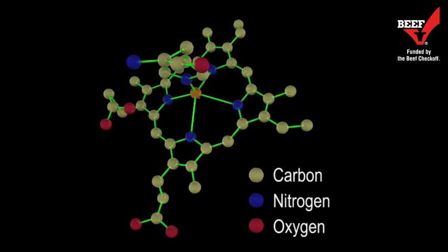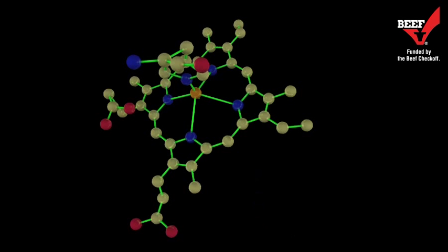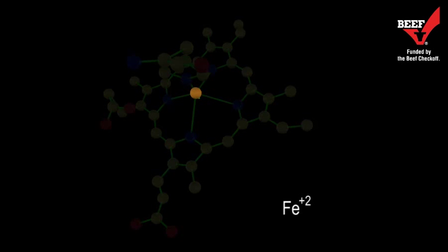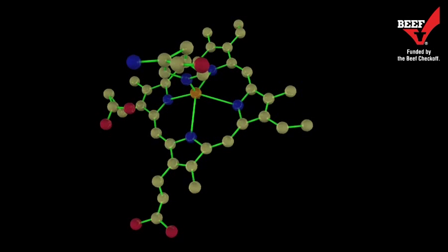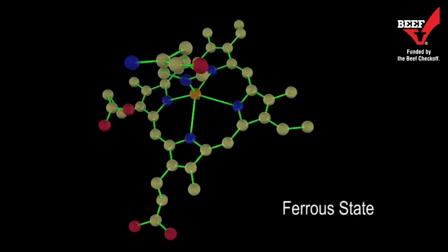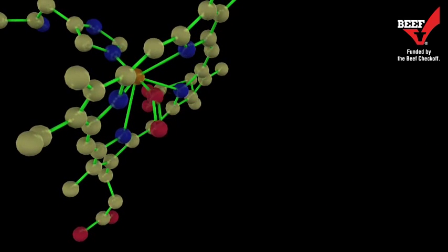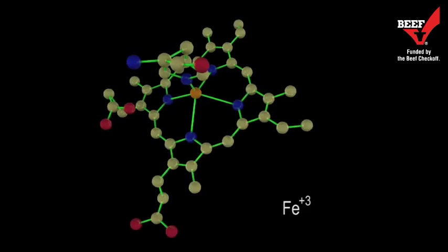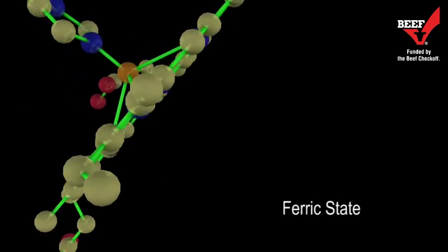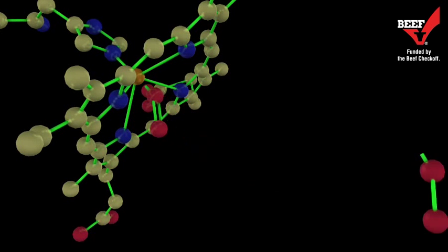The redox state, as well as the ligand or atom bound to the heme ring, dictate the visible color of meat. When the valence state of iron within the heme ring is in a reduced or ferrous state, it is able to bind with other molecules. However, when oxidized or in a ferric state, it cannot bind with other available molecules.